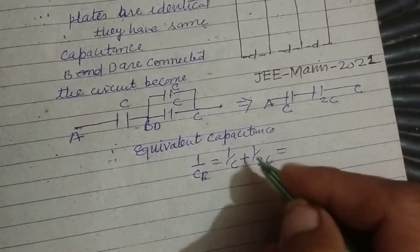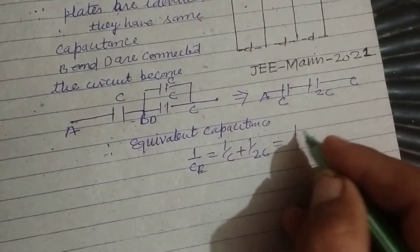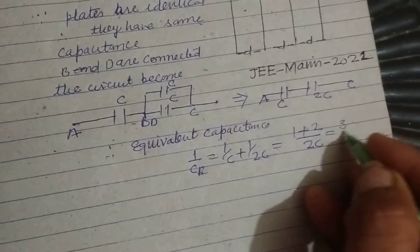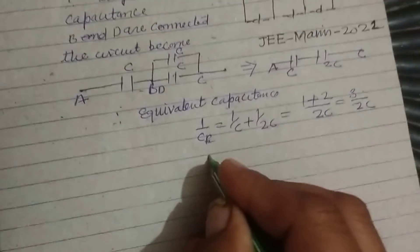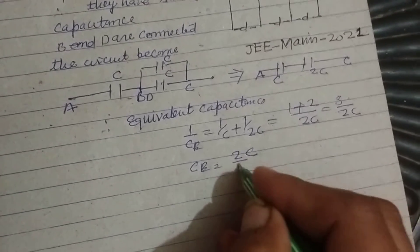So in series combination, equivalent capacitance is 1 upon C plus 1 upon 2C. So this is 1 plus 2 over 2C or 3 over 2C. So C equivalent equal to 2C by 3.